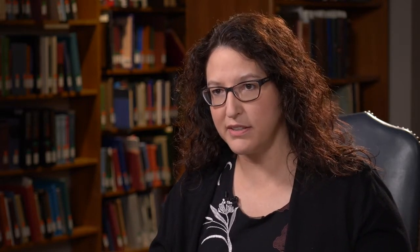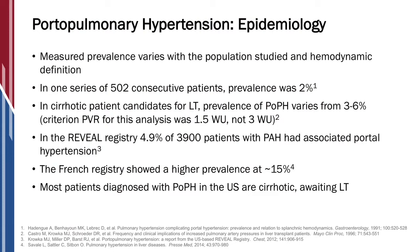It can develop at any stage of liver disease. What do we know about prevalence? Well, we know from a study in the 90s looking at patients with liver disease — of the 500 patients followed, about 2% of those individuals went on to develop portopulmonary hypertension. So again, a rare disease, but something that is extremely important when you're talking about patients going towards liver transplant.